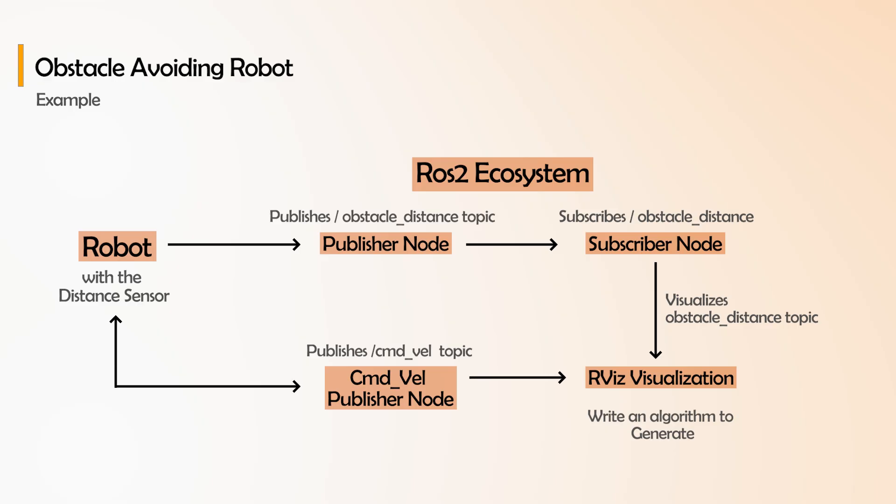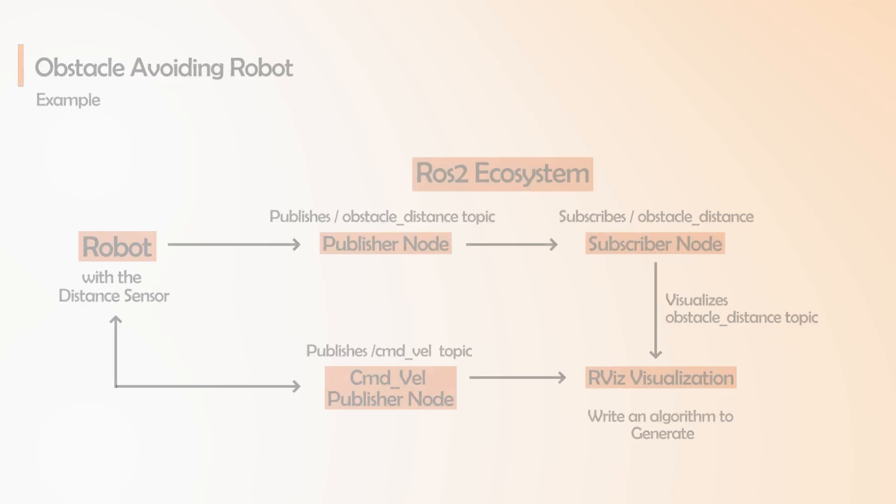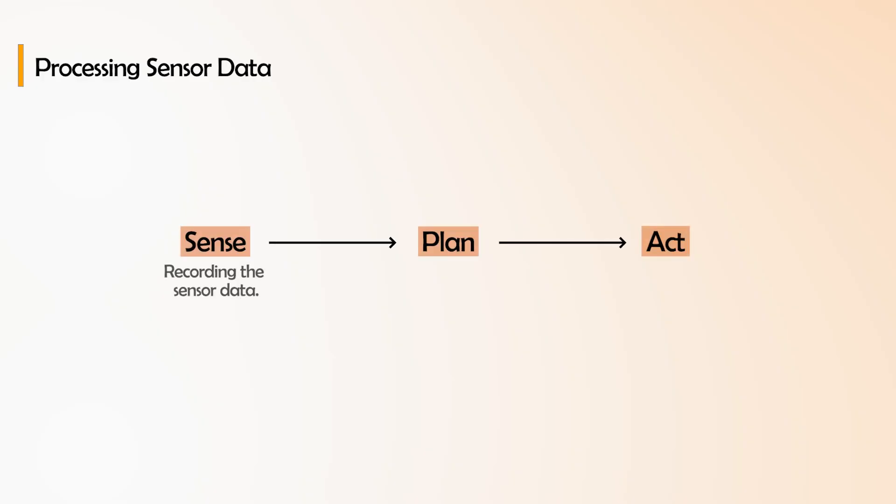That velocity command is sent on the command velocity topic to the robot. In this whole process you will write nodes, and you can also use a service — for example, whenever there is an obstacle, turn left. A service is a different type of communication style compared to nodes. The main thing you are learning here is processing sensor data: sense, plan, and act — behavior planning on the ROS 2 node and executing on the robot with command velocity.